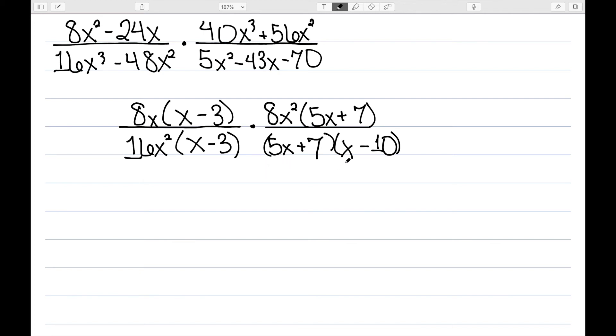Foiling out gives me 5x times x, that's my 5x squared. My outside term is 5x times negative 10, so that's a minus 50x. Inside is 7 times x, so that's a plus 7x, and we can see that these combine to give me the minus 43x. And then 7 times negative 10 is negative 70, so this does work out nicely.